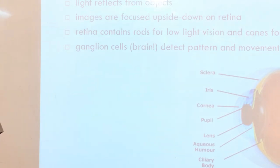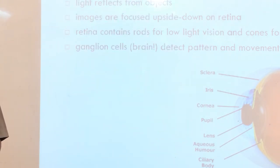So next, how does it interpret the signal? The size and depth of vision. Visual angle indicates how much of the view an object occupies. This relates to size and depth in eye vision.